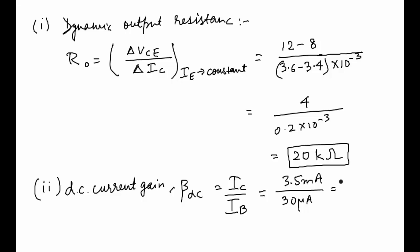That is 3.5 into 10 to the power minus 3 by 30 into 10 to the power minus 6, so this comes out to be 350 by 3, which is nothing but 116.67. So this is the answer for our second part.